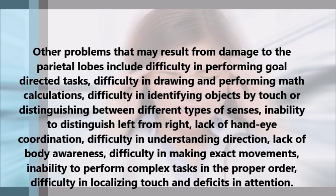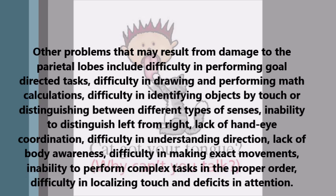Additional effects of parietal lobe damage include difficulty in understanding direction, lack of body awareness, difficulty in making exact movements, inability to perform complex tasks in the proper order, difficulty in localizing touch, and deficits in attention.